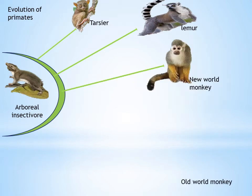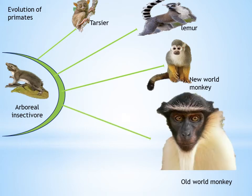Old world monkeys also belong to order Anthropodia. They have a narrow nose, short non-prehensile tails, and 32 teeth. Old world monkeys are found in tropical regions of Africa and Asia. Examples include baboons and langurs.